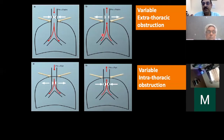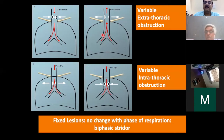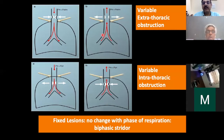When lesions are fixed — for example, a cicatrized subglottic stenosis or tracheal stenosis that does not move — this leads to a consistent sound during both inspiration and expiration, which is called biphasic stridor.